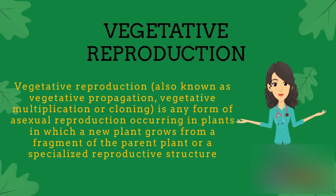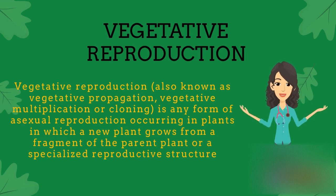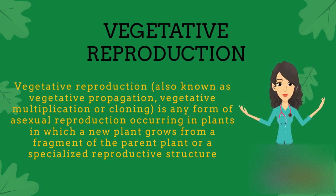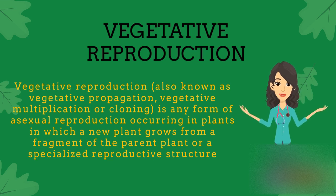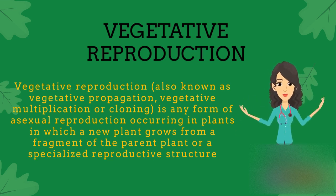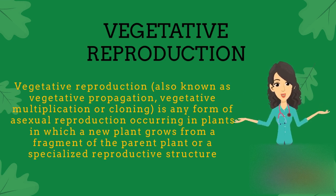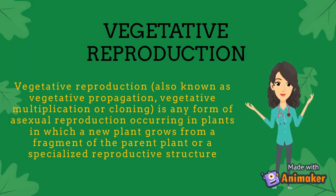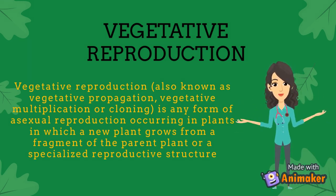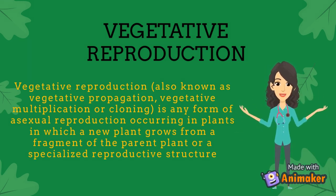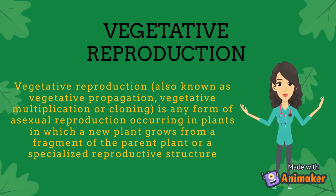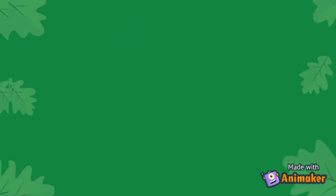Natural vegetative propagation is mostly a process found in herbaceous and woody perennial plants, and typically involves structural modifications of the stem. Although any horizontal underground part of a plant — whether stem, leaf, or root — can contribute to vegetative reproduction of a plant.